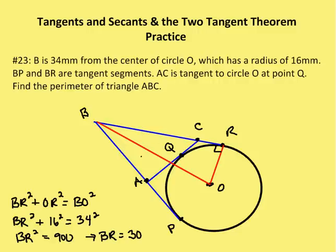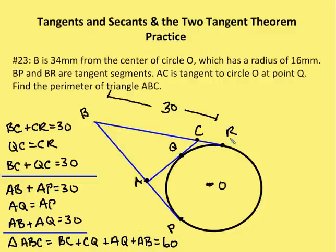We're going to take that information and apply it. BR is 30 units. And I know that BC, so this length here, plus CR is equal to 30 units. And I know that QC is congruent to CR. So B to C to Q is 30 units. So B to C to Q is 30 units, just as B to C to R is 30 units. Then I know B to P is 30 units. I know that B to P consists of BA plus AP. I know that AP is congruent to AQ. So now B to A to Q ends up also being 30 units.